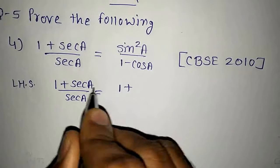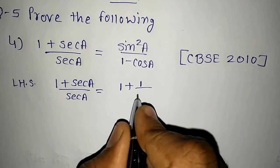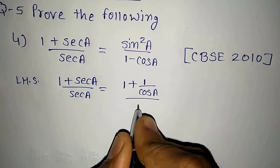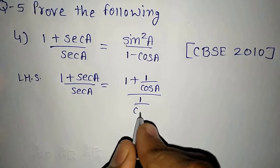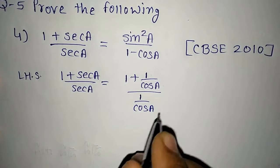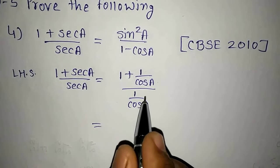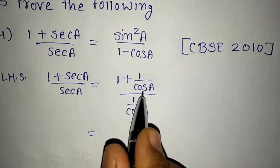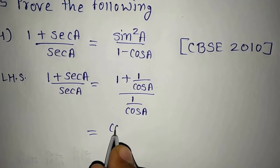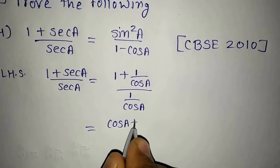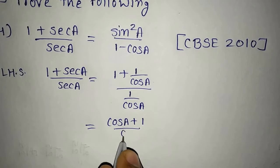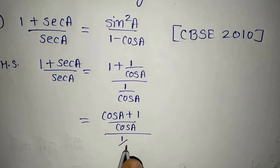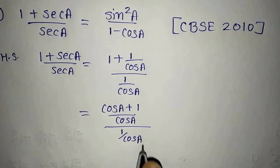I will write it: 1 plus sec A is equal to 1 plus 1 upon cos A. Here also, I will convert — 1 upon sec A is equal to cos A. So we have 1 plus 1 upon cos A. I will take the LCM over here, which gives cos A plus 1 upon cos A, upon 1 upon cos A.